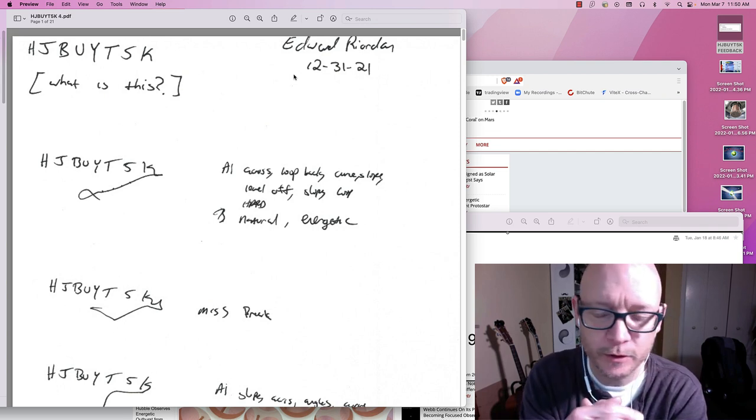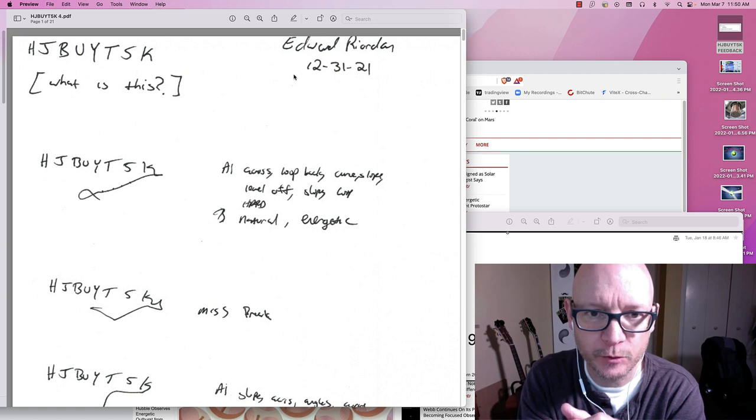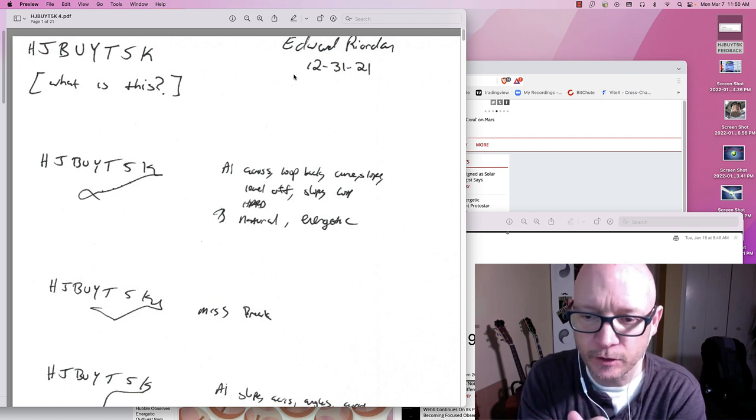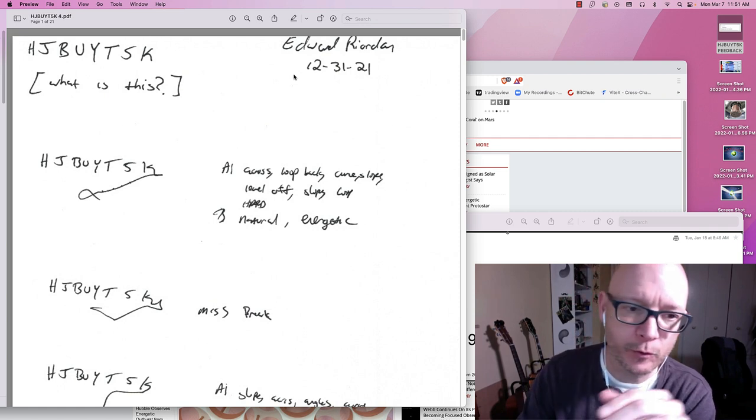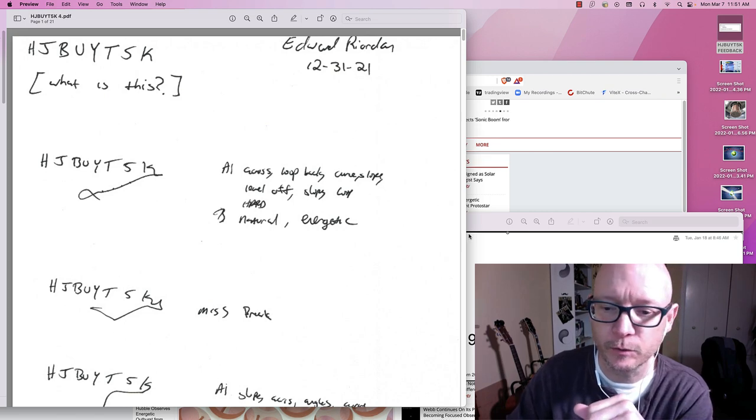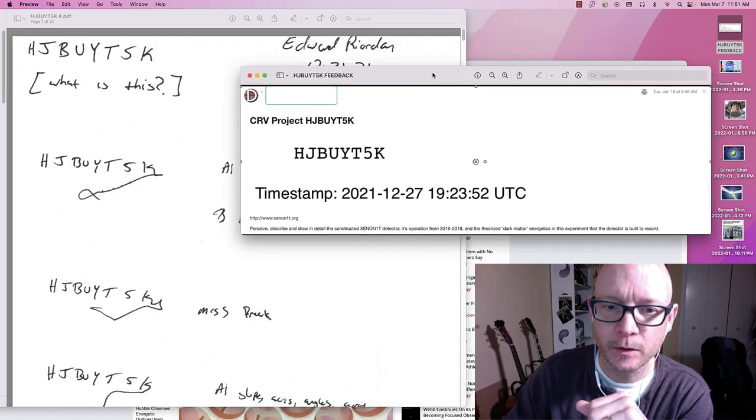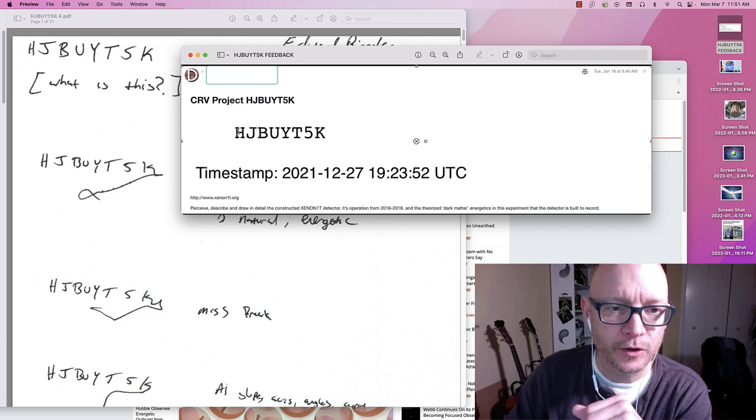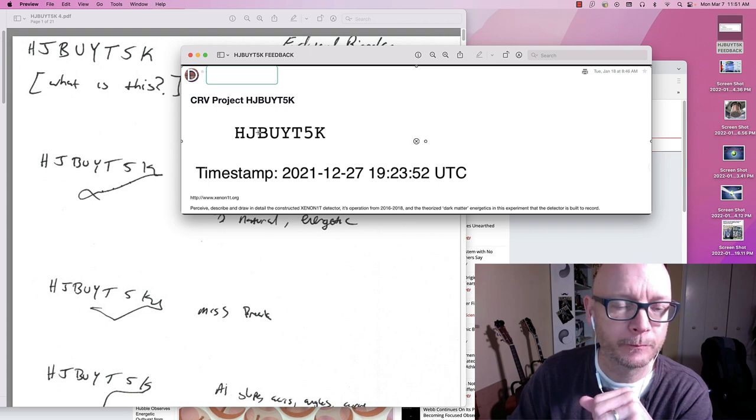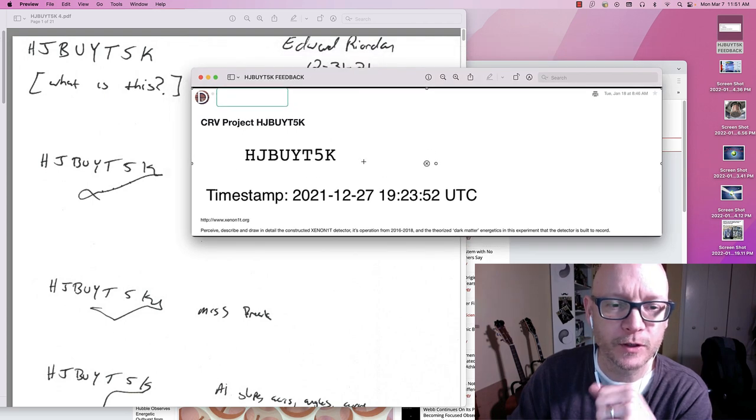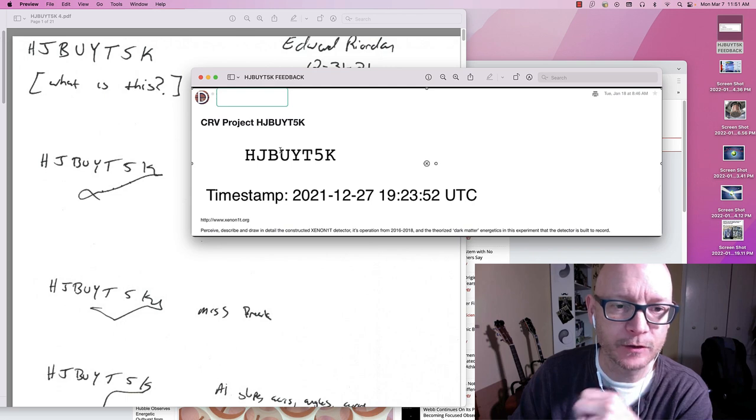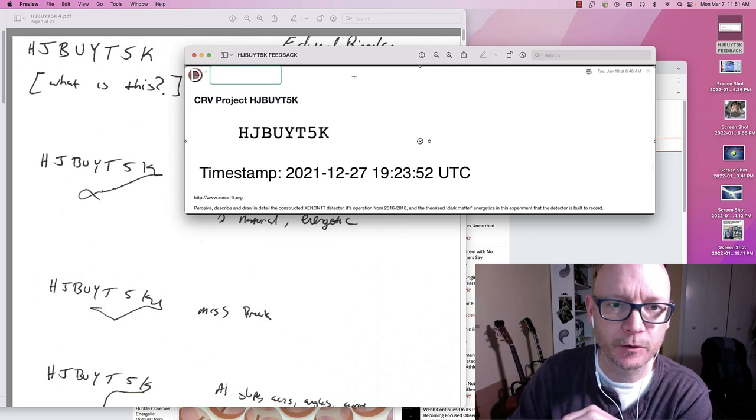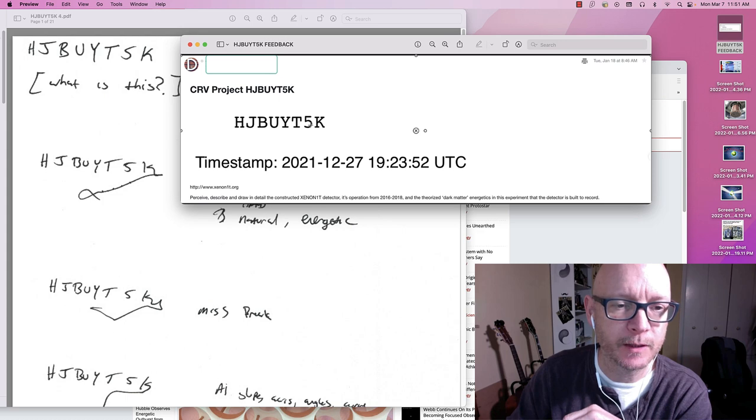This is a target that I worked with my buddy Dustin Newcomb. He selected the target, put it together for me. I was, of course, completely blind to the target. This was the target ID that he set up for me on the 27th. All I got was the target ID here. He sent this to me via text. This clip here I got when he sent me the feedback.